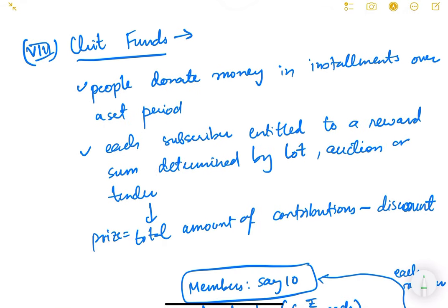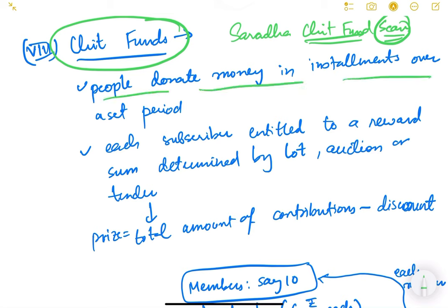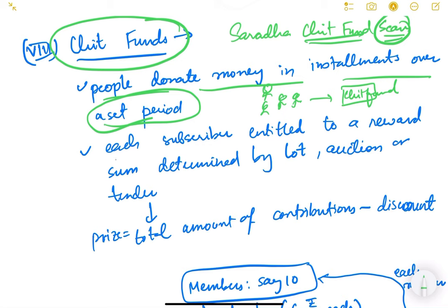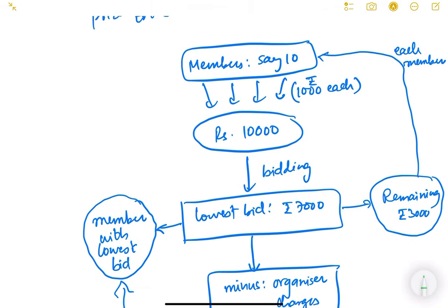The next type is chit funds, a very important concept you must have heard about in the news — for example, the Saradha chit fund scam. In a chit fund, people donate money in installments over a set period, and each subscriber is entitled to a reward sum determined by lot, auction, or tender. For example, if there are 10 members each depositing 1,000 rupees per month, the monthly collection is 10,000 rupees.